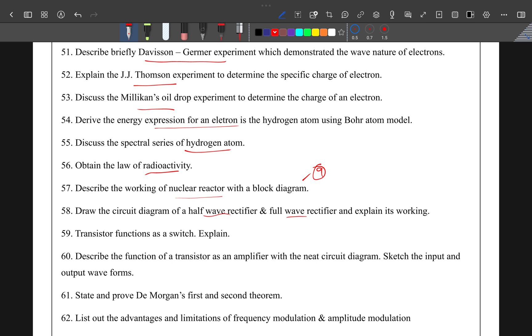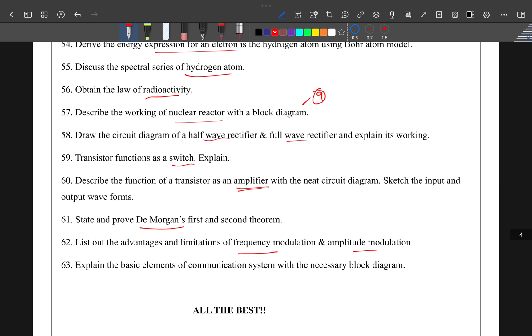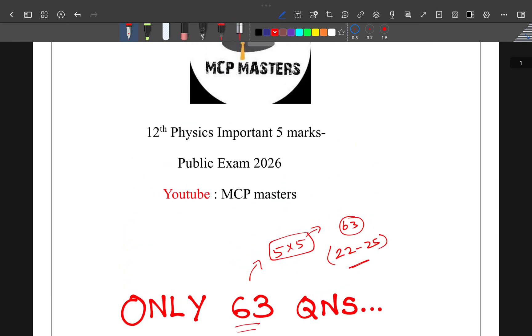Half-wave and full-wave rectifier, transistor functioning as a switch and amplifier, De Morgan's first and second theorem, frequency modulation, amplitude modulation, and elements of communication. This is the 10th lesson. The entire list covers 63 questions. If you're learning this, you can master 4 to 5 five-mark problems. You can download the PDF from the description. We will meet in the next video. Thank you.